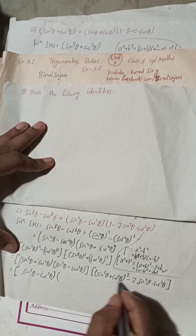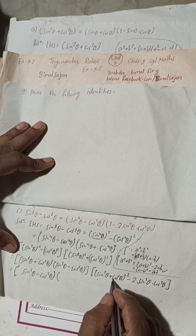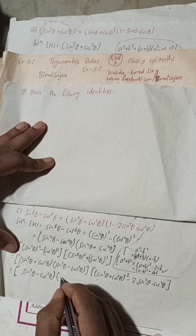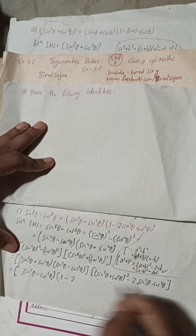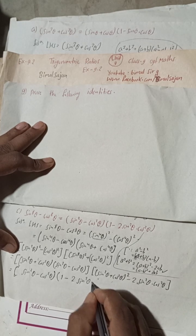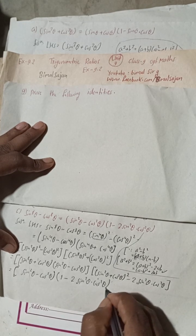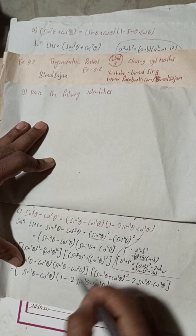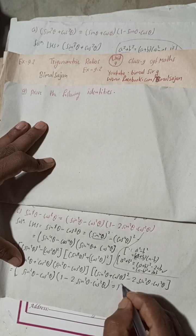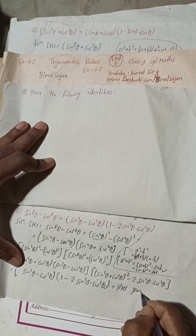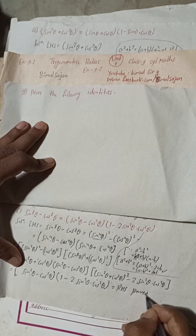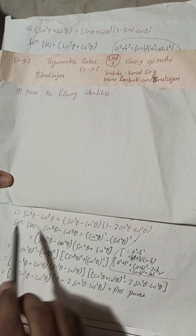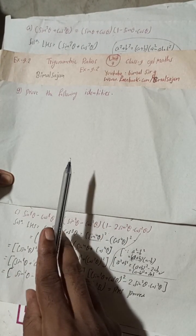Again, sin²θ + cos²θ = 1, so 1² = 1, and we are left with (sin²θ - cos²θ)(1 - 2sin²θcos²θ), which equals the RHS. Proved! This is the complete solution of 9C. I have already solved 9A and 9B — you can check the playlist.